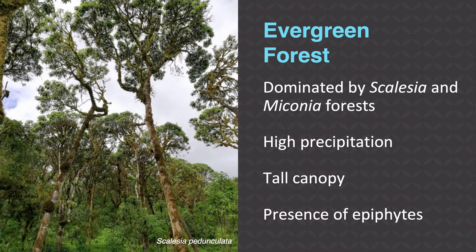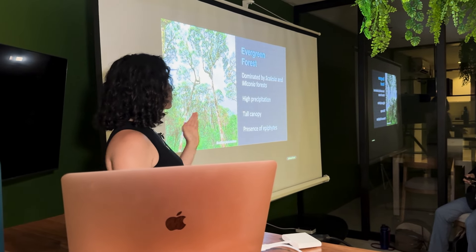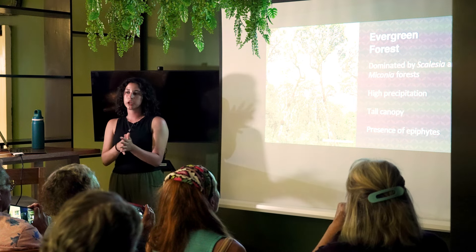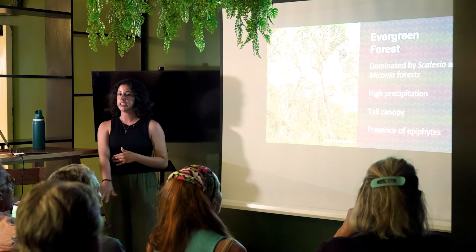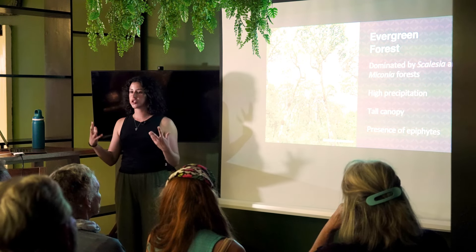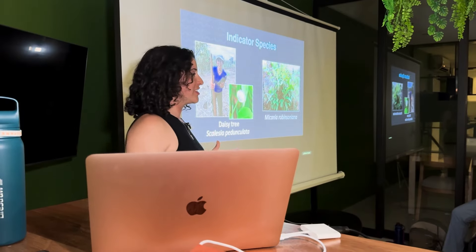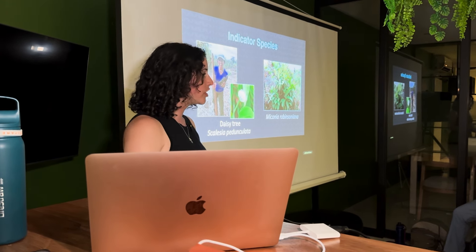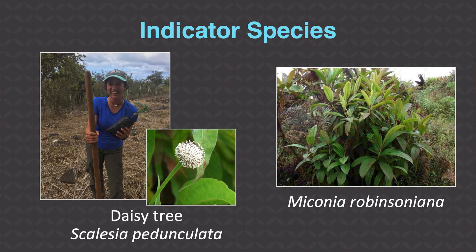The evergreen forest is dominated by Scalesia and Miconia — two plants endemic to the Galapagos Islands. We see much higher precipitation here, having transitioned from the dry lowlands to the humid highlands. The canopy is much taller and there is a presence of epiphytes growing on the trees — you can see them growing on the Scalesia tree. The two main plants are Miconia robinsoniana — the daisy tree — and Scalesia pedunculata. A personal photo shows helping in a restoration project planting Scalesia trees in the highlands.